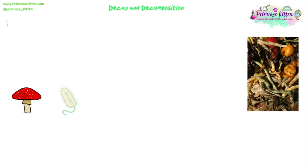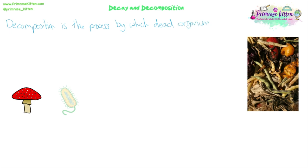So we're going to be looking at decay and decomposition today. Decomposition is the process by which dead organisms or waste products are broken down into smaller molecules including carbon dioxide, sugars, amino acids and minerals — which are just some examples. That's the actual breakdown, so decomposition is the actual breakdown of the dead matter.